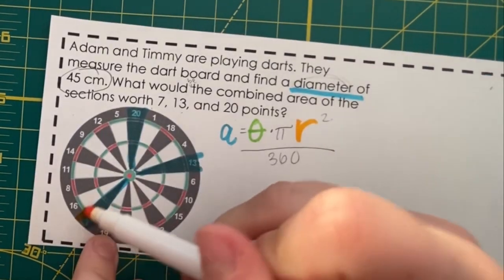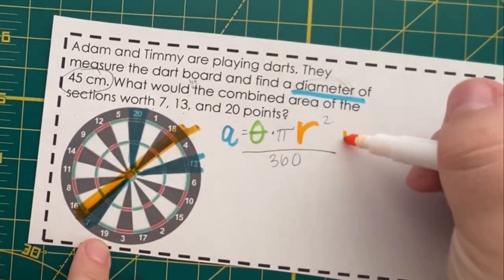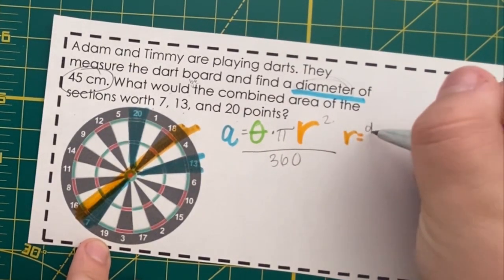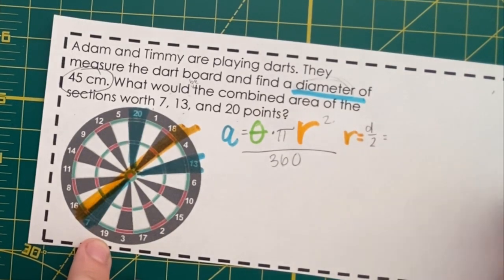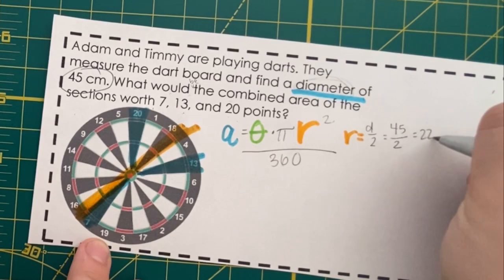We weren't actually given our radius. We were given our diameter this time. So, that would be the entire length across. To find the radius, we need to divide the diameter by 2. So, 45 divided by 2 is going to be 22.5.